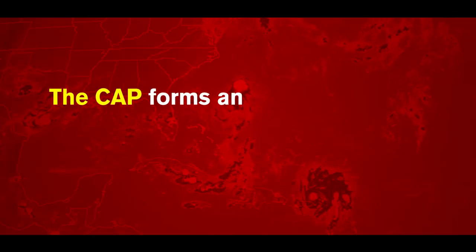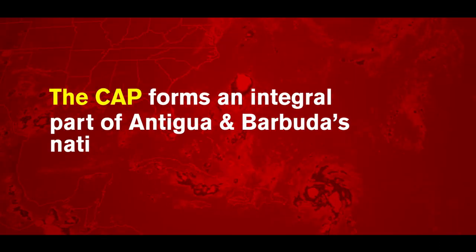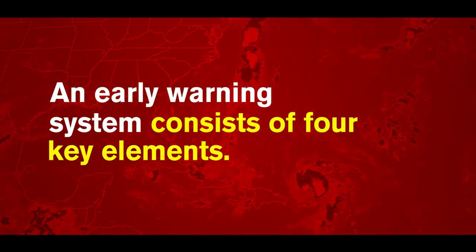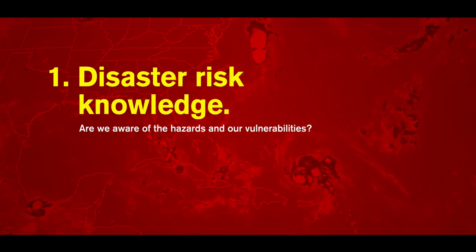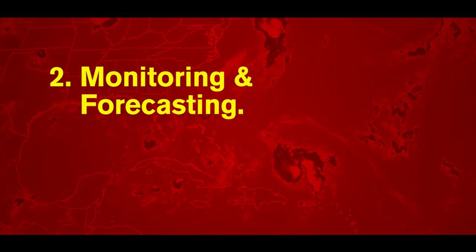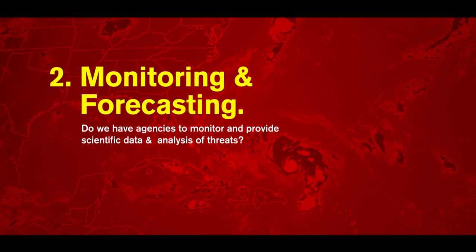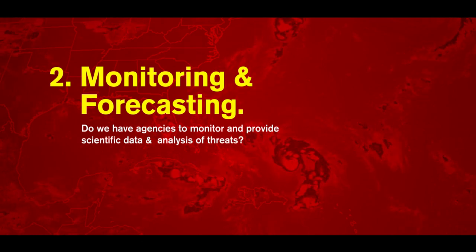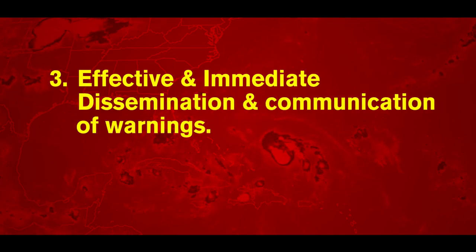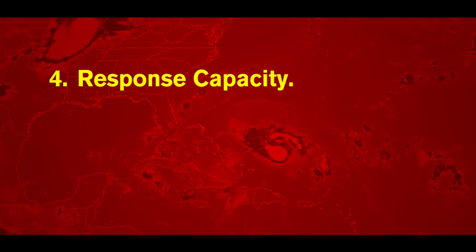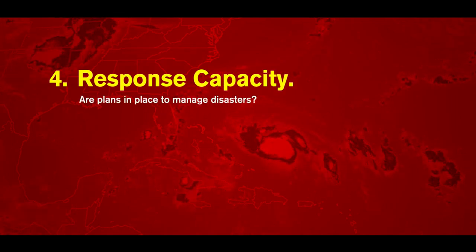The CAP forms an integral part of Antigua and Barbuda's National Early Warning System. An early warning system consists of four key elements: one, disaster risk knowledge — are we aware of the hazards and our vulnerabilities? Two, monitoring and forecasting — do we have agencies to monitor and provide scientific data? Three, effective and immediate dissemination and communication of warnings. And four, response capacity — are plans in place to manage disasters?